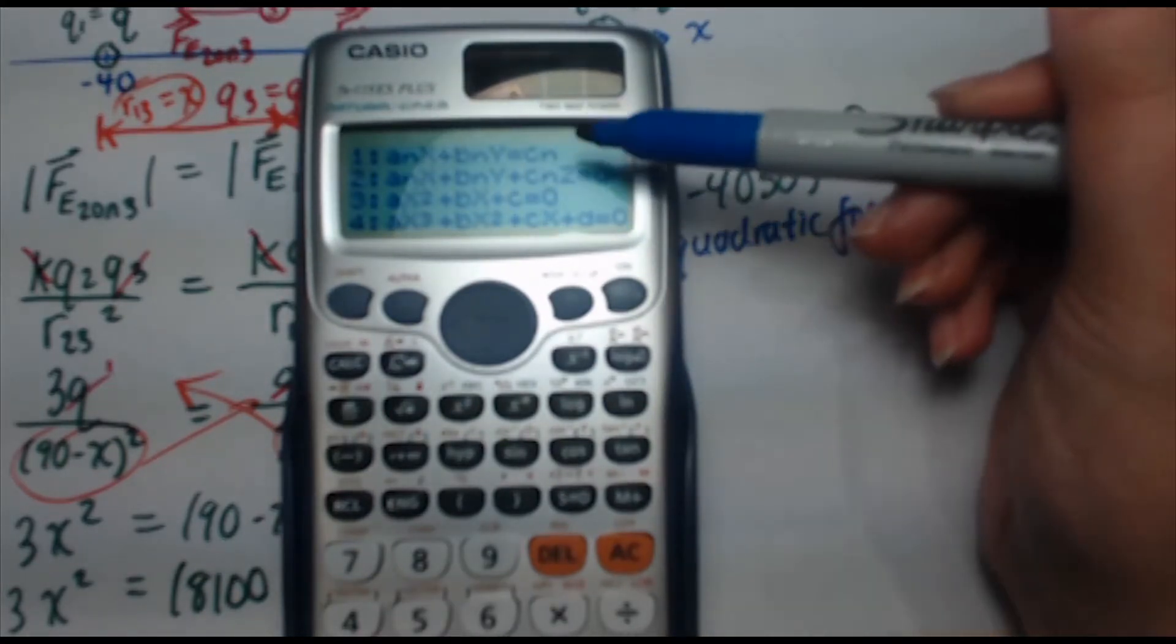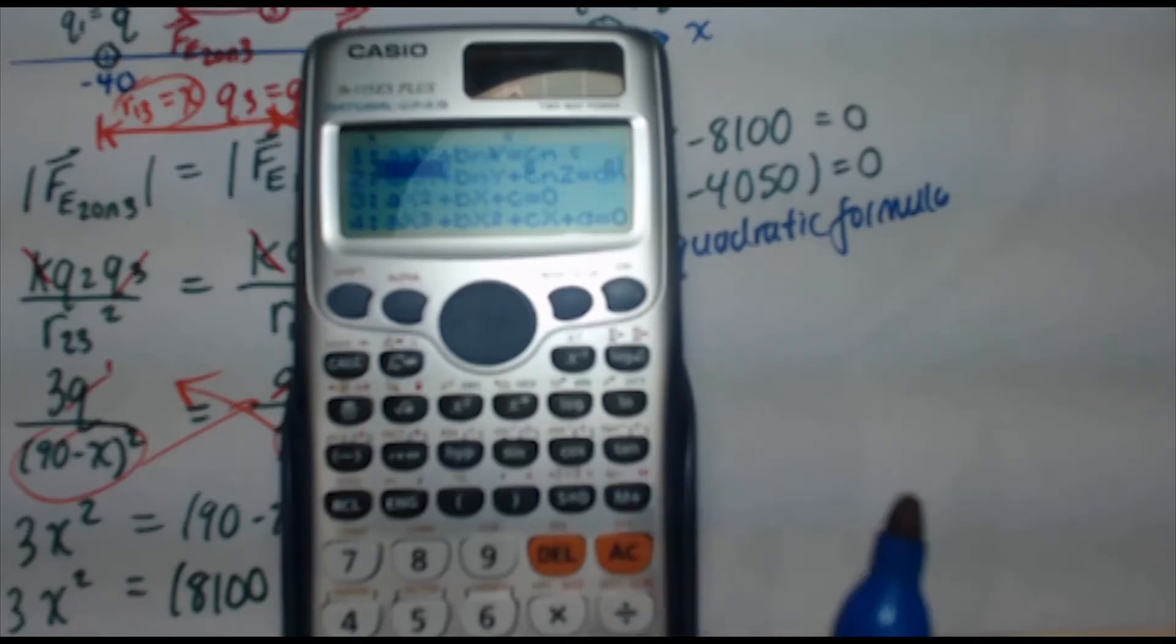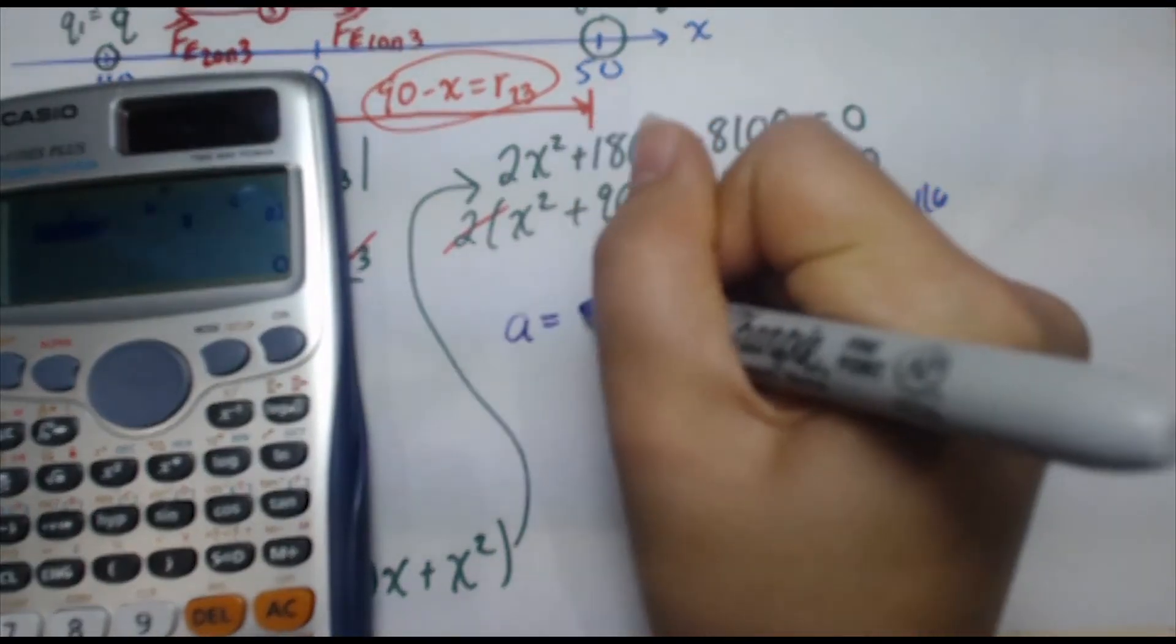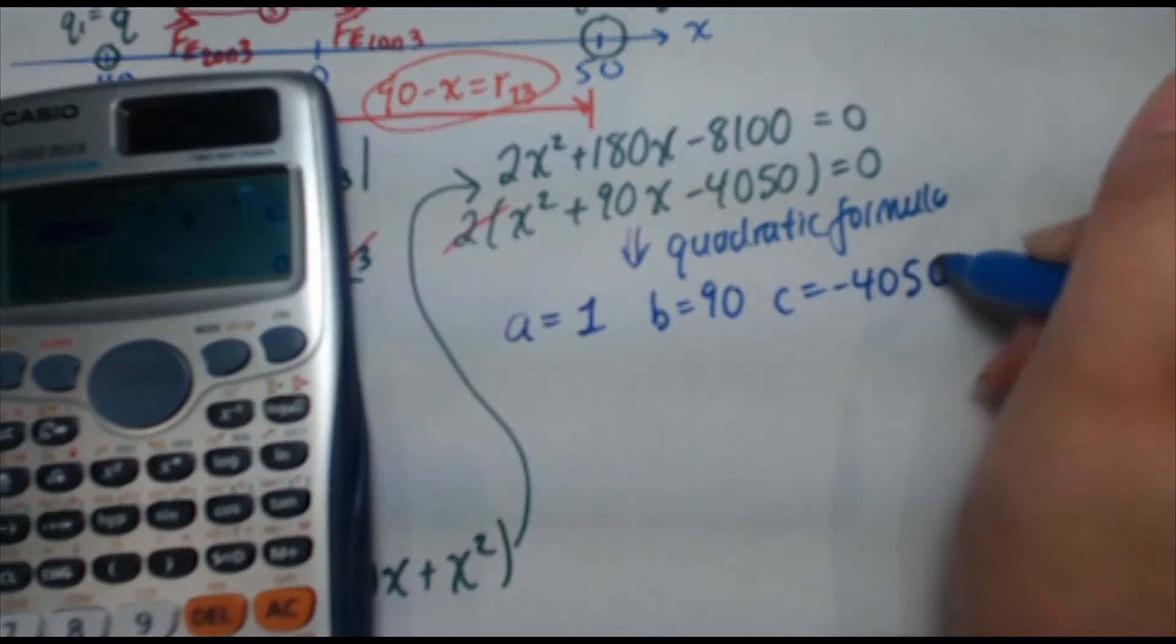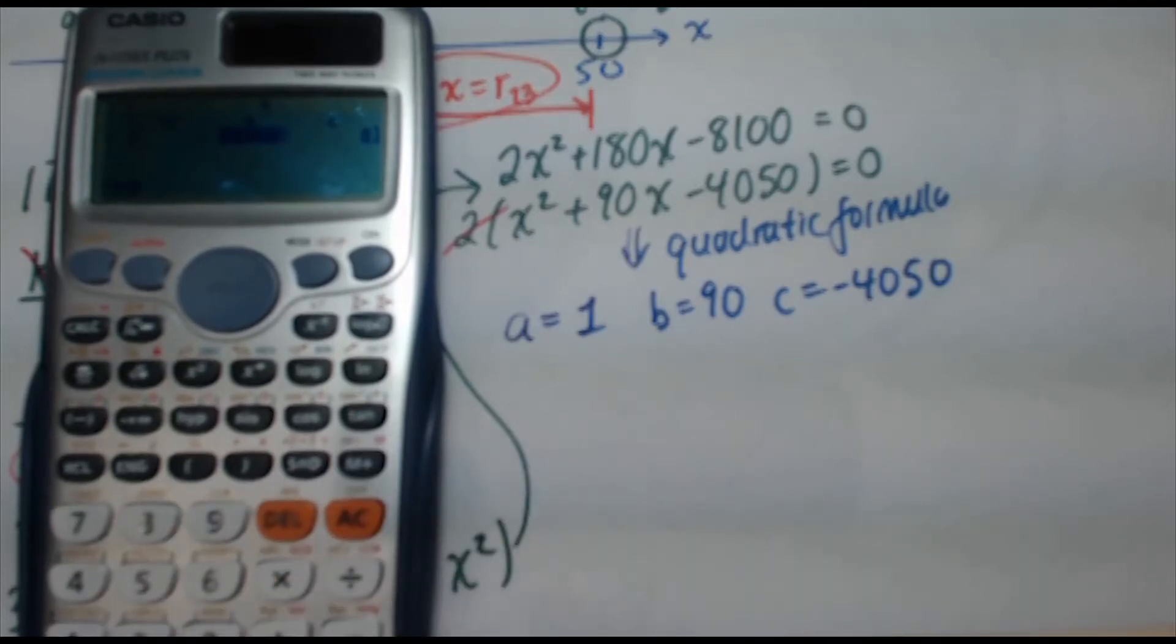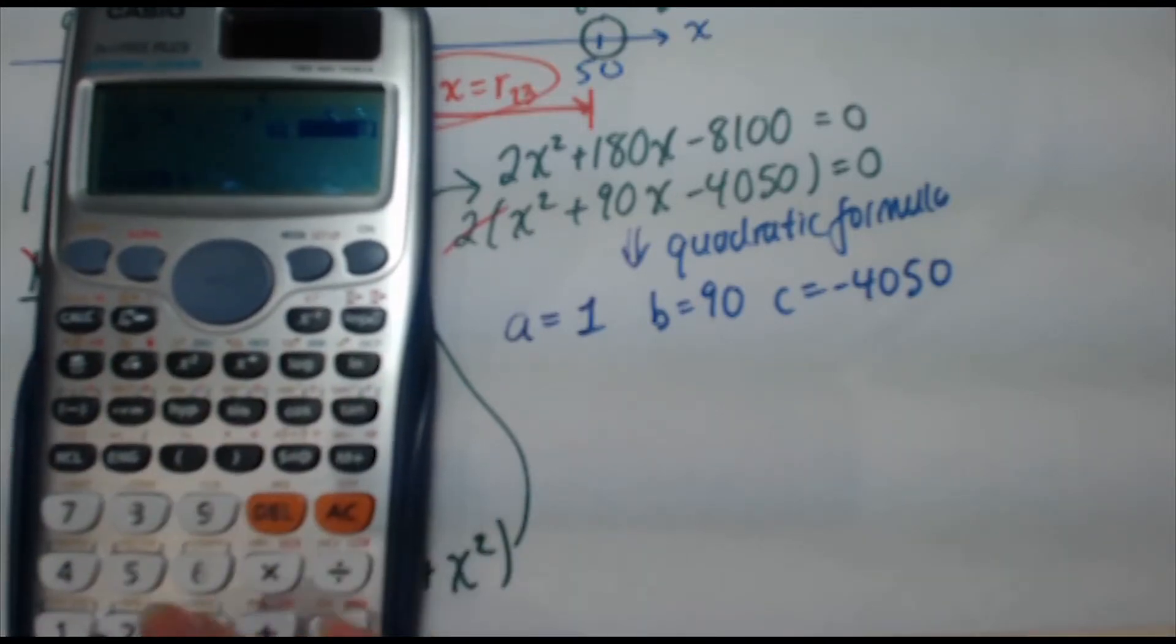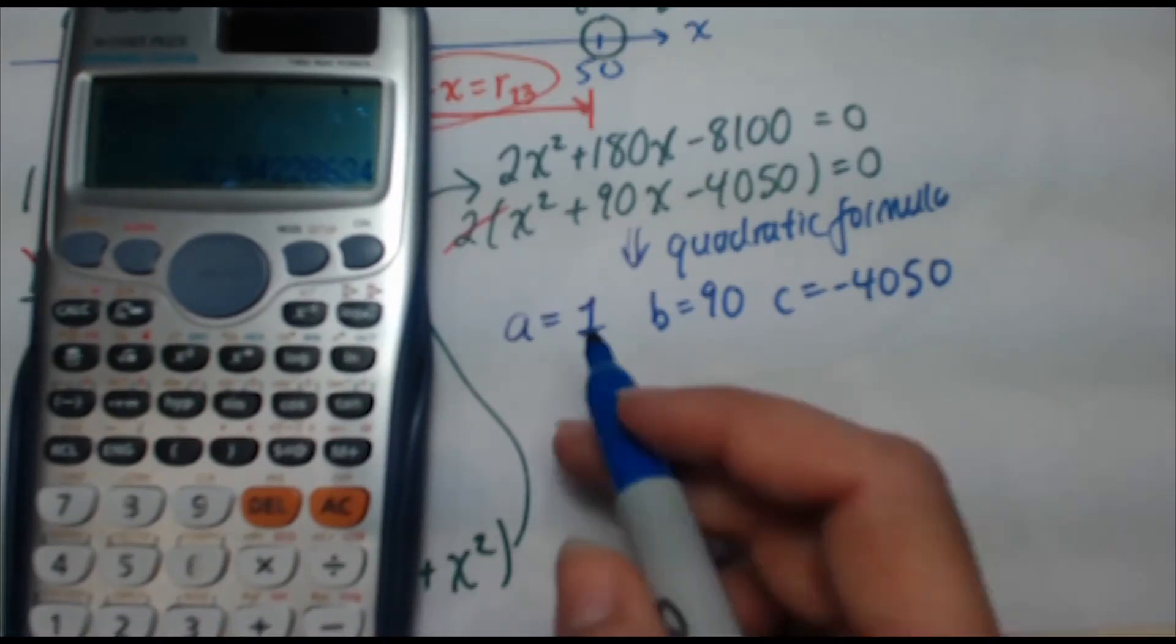Now a whole bunch of different types of expressions come up. Now the expression I want is number three, ax squared plus bx plus c equals zero. So I'm going to press three and it's prompting me to enter the value for a. So if you look at our expression, a is going to be one, b is going to be 90, and c is going to be negative 4050. So plug in your values, a is one, enter, b is 90, enter, c is negative 4050, enter. And then you press enter one more time and it's going to calculate your zeros there.